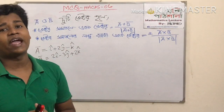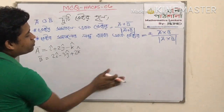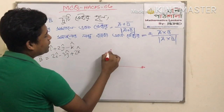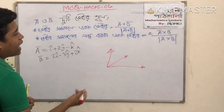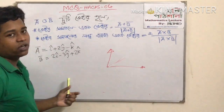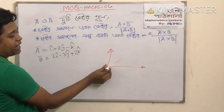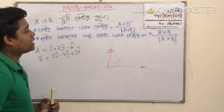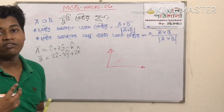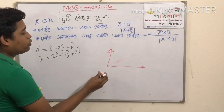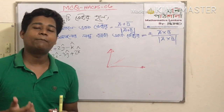A vector is a vector. So the vector fits all the vectors. What is the difference? This two vector A cross B is a long vector, which we call a cross vector. So we know that the two vectors are cross.